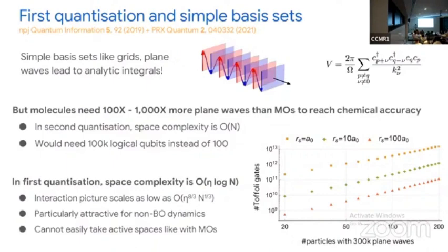With this larger value of N, you can actually get much better scaling in N as well. So even though N is larger, an N to the one-third scaling gives you much better performance than the N to the third scaling with the smaller N from before.